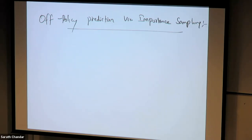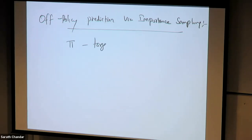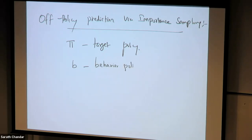Off-policy prediction means policy evaluation — the policy is fixed. Instead of one fixed policy, we now have two: pi, the target policy, and b, the behavior policy, and both are fixed.